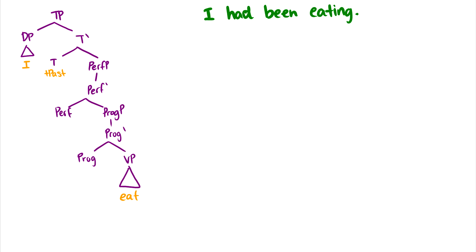So, let's just do what we've done before. Perfect splits into have and the en suffix. Progressive splits into be and the ing suffix. Okay, so have moves up to T to get past tense and that becomes had. This en suffix, well, it can't move down to the verb because there's another intervening verb which would be the progressive be. So, it just moves down and attaches to the progressive be. Finally, this ing suffix moves to eating and now we have the sentence I had been eating.